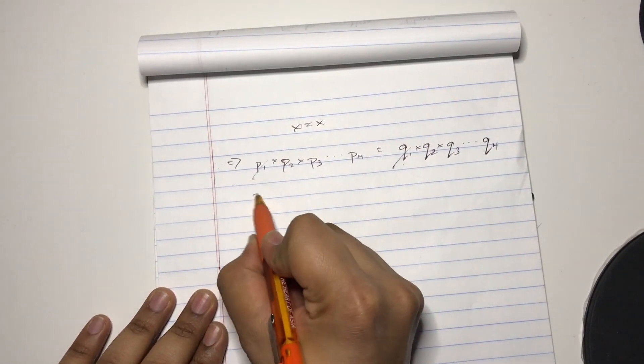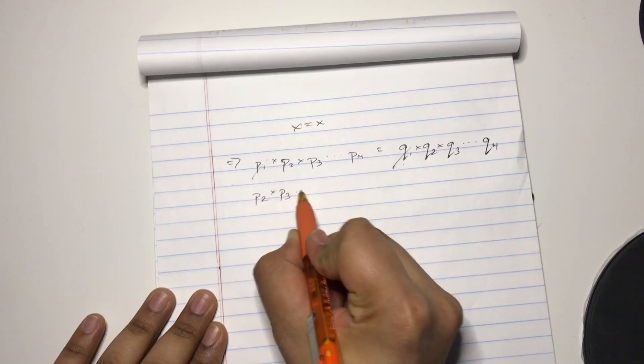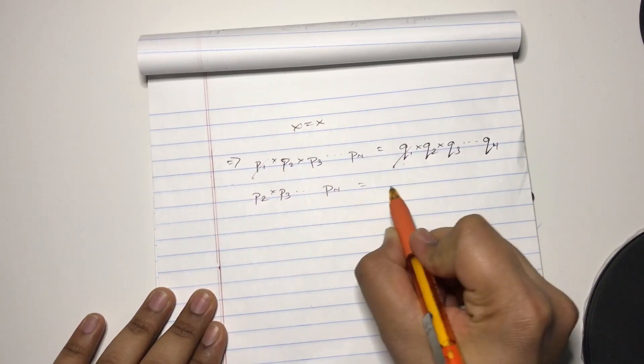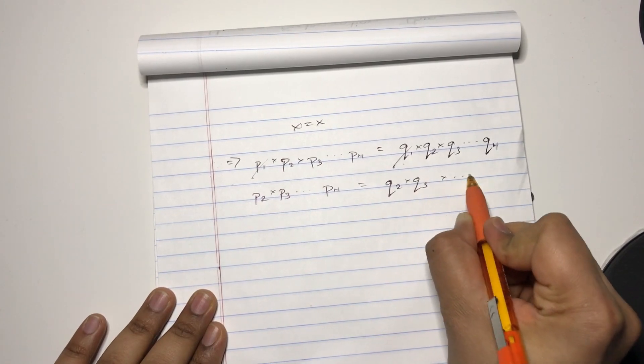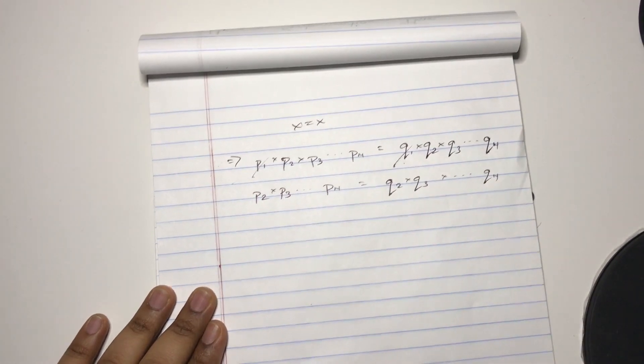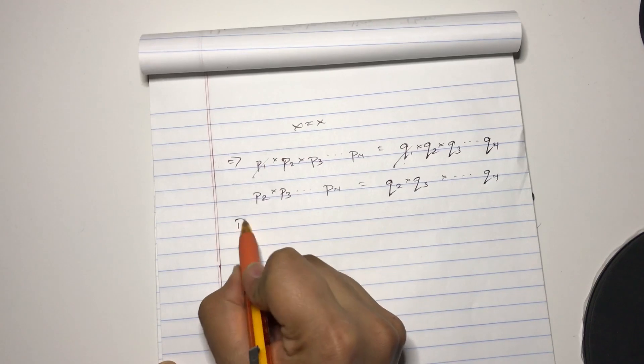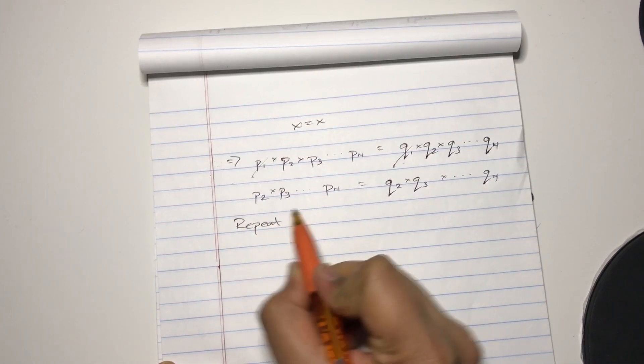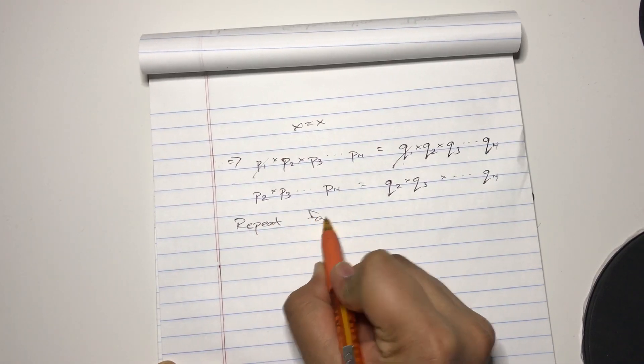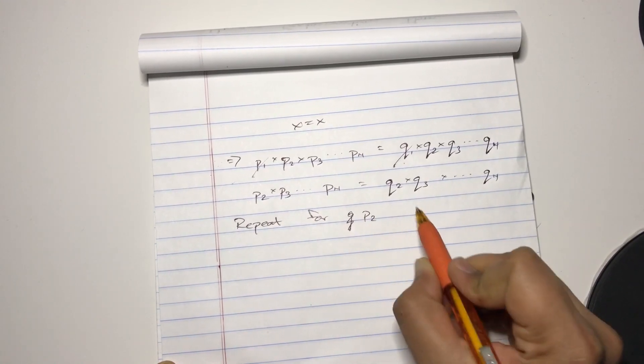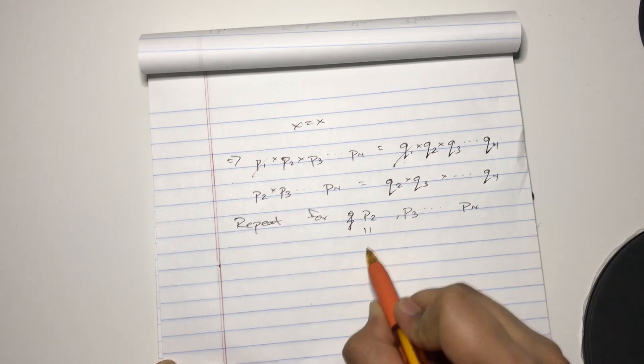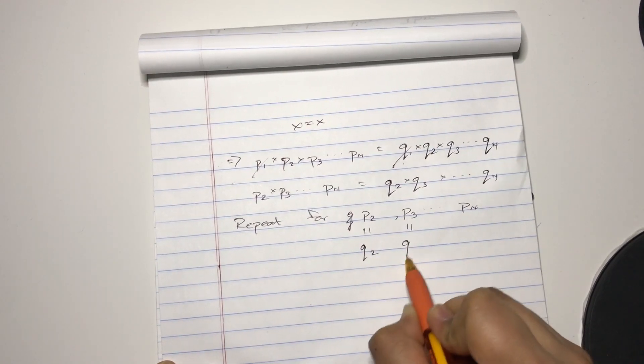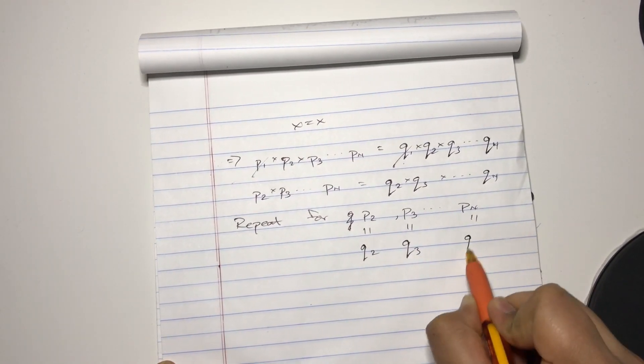We can just cancel it. So we have p2 times p3 all the way to pn equals q2 times q3 all the way to qn. But we're going to repeat what we just did for p2, p3, and so on and so forth. So that p2 equals q2, p3 equals q3, and pn equals qn.